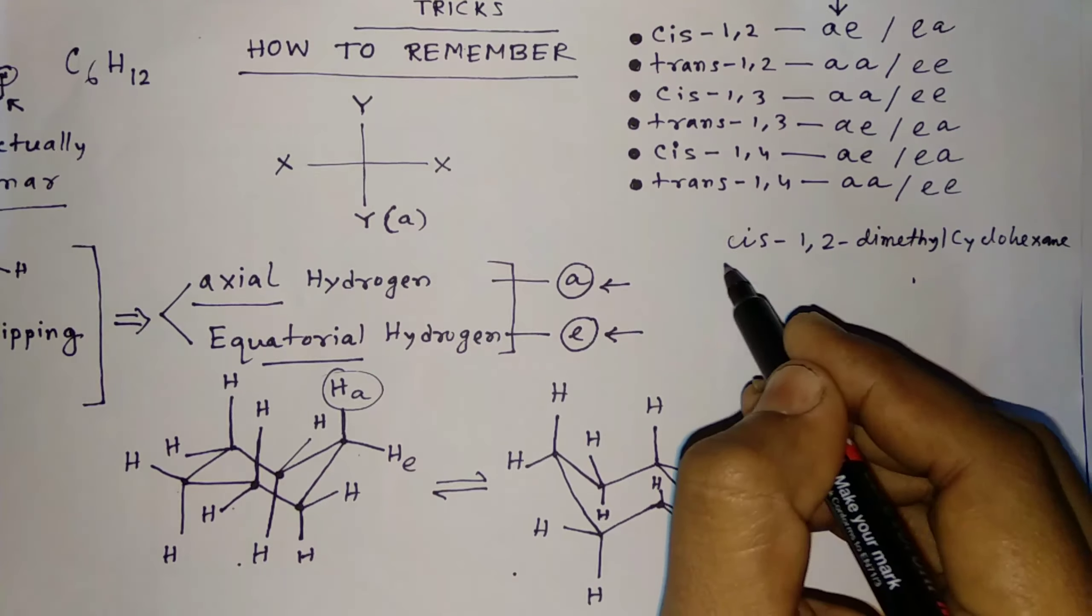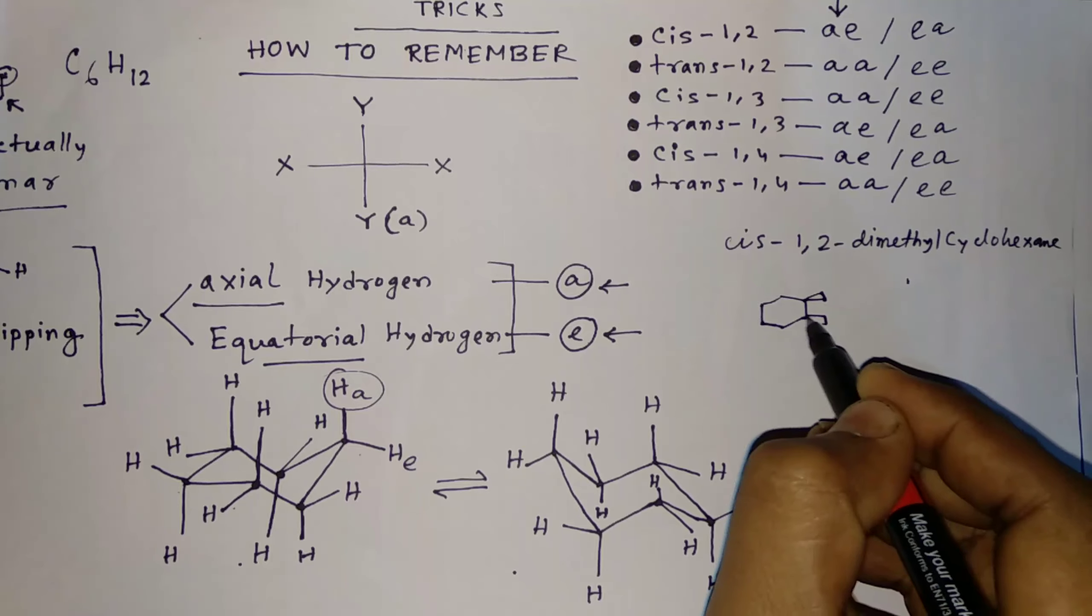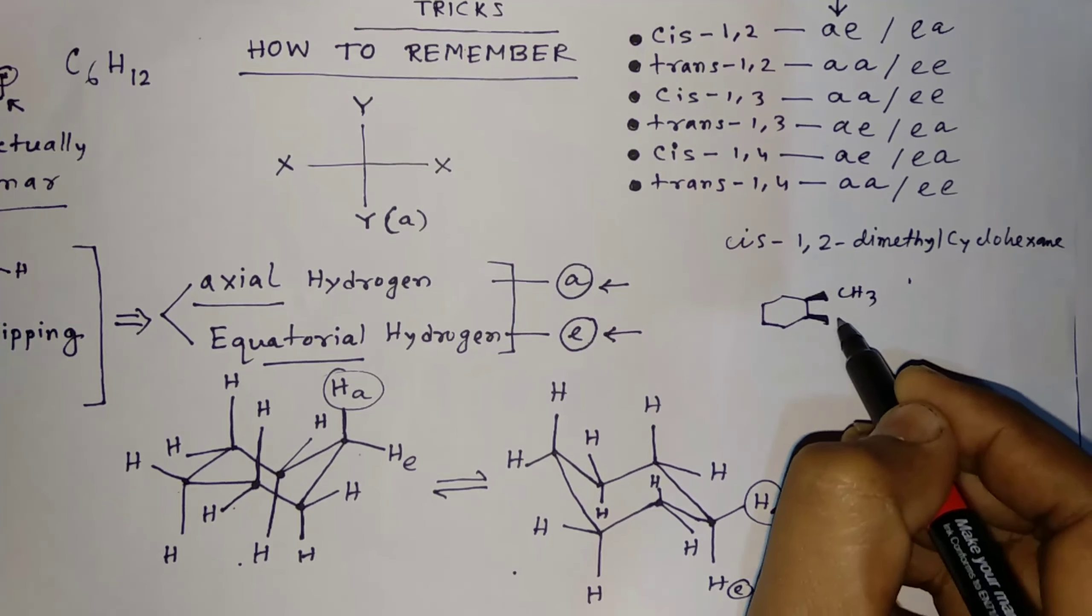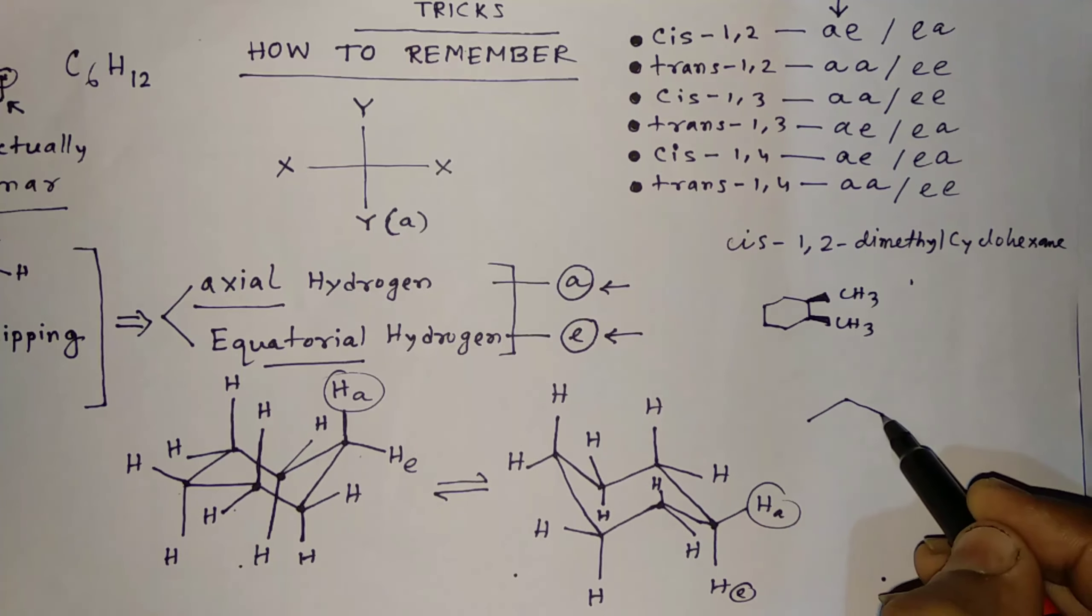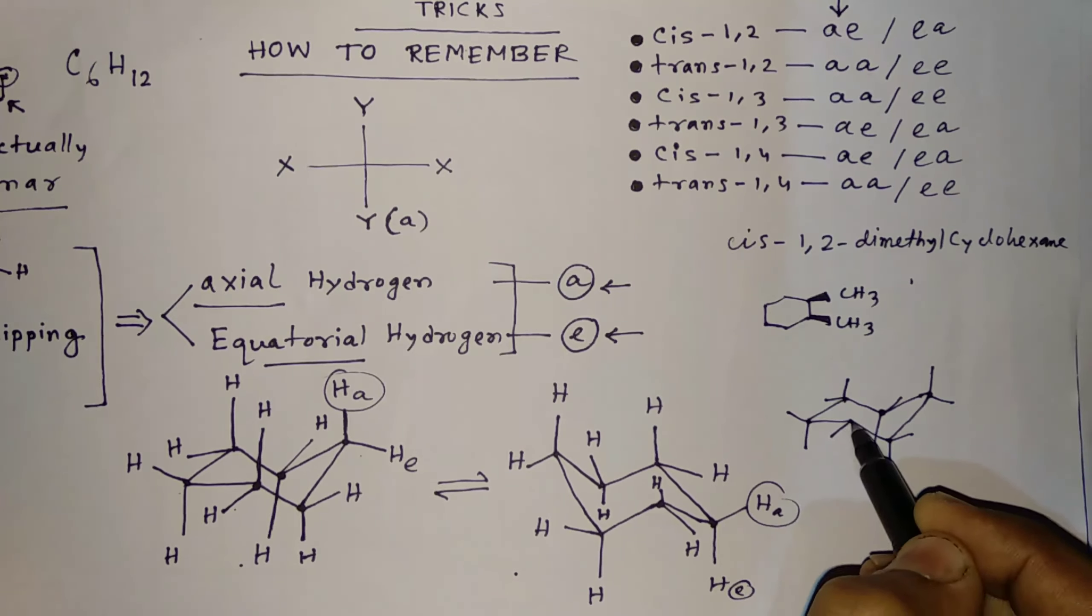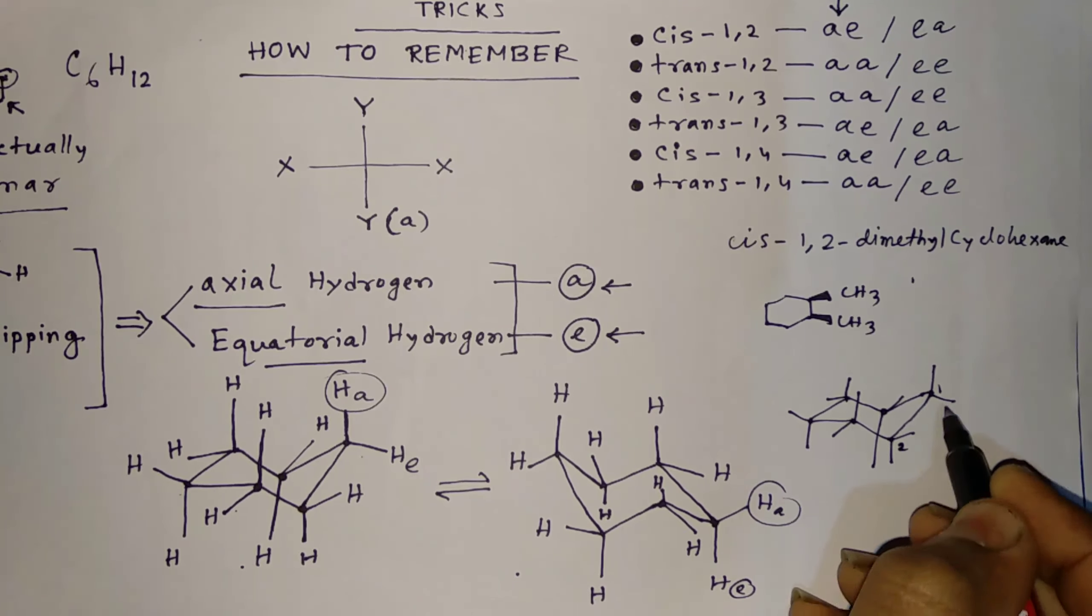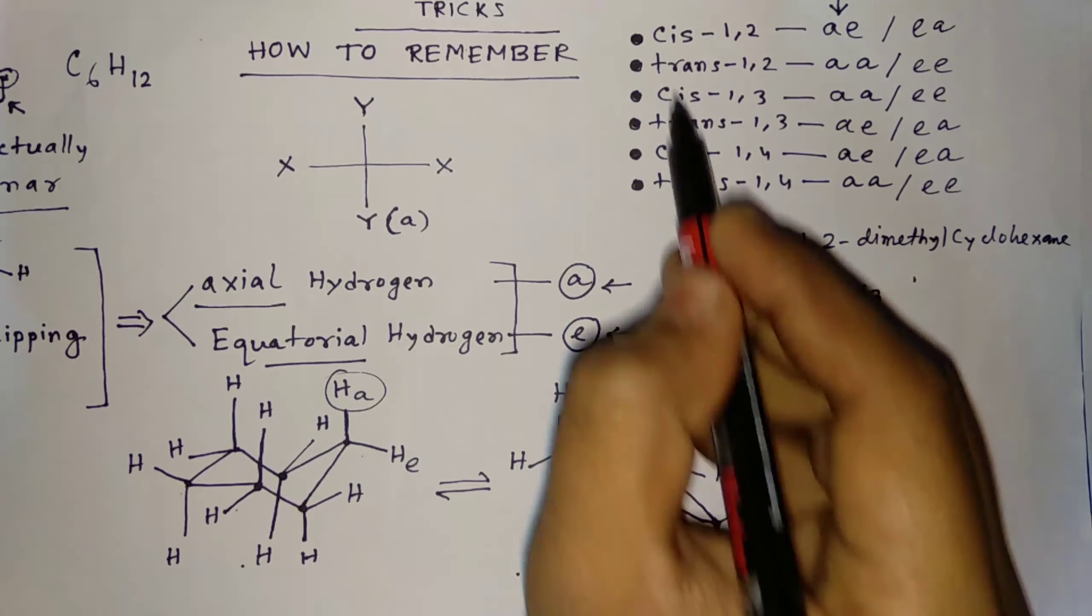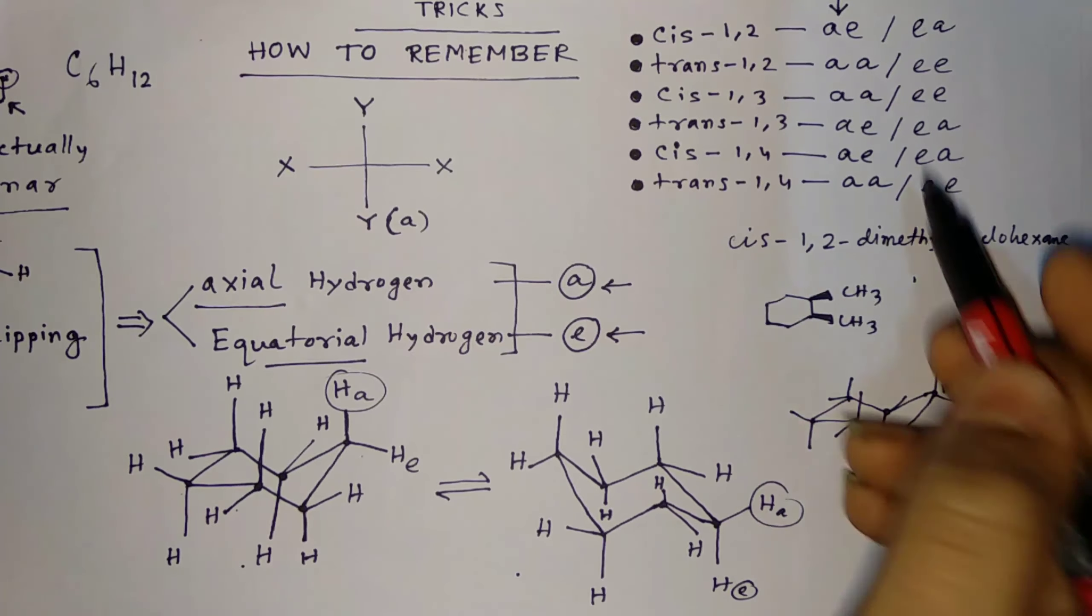Now let's talk about CIS-1,2 dimethyl cyclohexane. First, CIS-1,2 means in the normal form we can write like this. If we draw cyclohexane, now say this is 1, this is 2, carbon number 1, carbon number 2. So 1,2, that is 1,2 means CIS-1,2, that means AE or EA. Whatever you like, you can write anything, AE or EA.